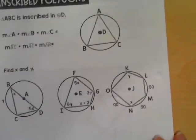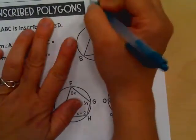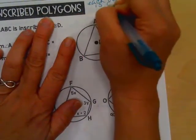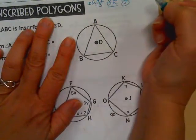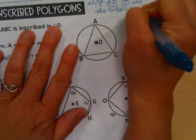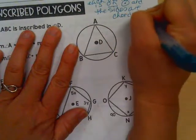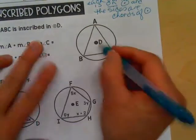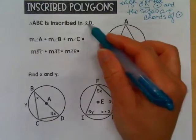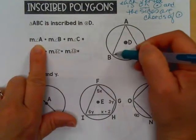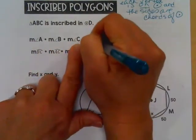All right, on the back side, inscribed polygons are just that. They are polygons where each vertex is on the circle. And the sides are chords of the circle. So ABC, triangle ABC is inscribed in circle D. D is my center. That's why it's named circle D. ABC is inscribed. But we know the measure of angle A plus the measure of angle B plus the measure of angle C. It's a triangle. It has to equal 180.